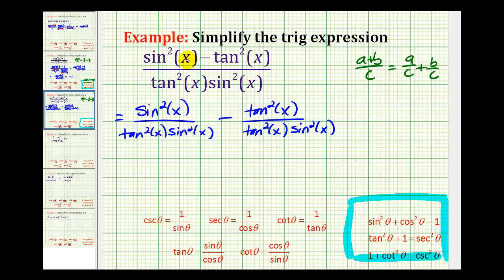So even though we couldn't simplify across the subtraction, if we rewrite this as individual fractions, we can take advantage of the common factors. Here we have sine squared over sine squared, that would simplify to one. And here we have tangent squared over tangent squared, which would simplify to one. So we're left with one over tangent squared x minus one over sine squared x.